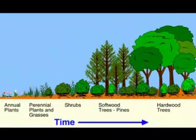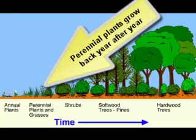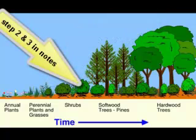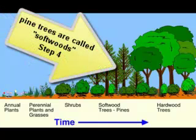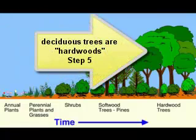Here you see a diagram of succession similar to the one on your handout. After a disturbance you start out with annual plants — flowers and grasses. Then you get perennial plants and grasses, which come back year after year. Then shrubs and small trees, followed by softwood trees like pines and evergreens. Eventually those are replaced by hardwood trees such as maple, oak, and beech. And that is ecological succession — see you in class.